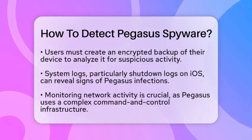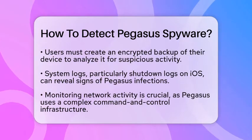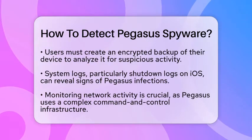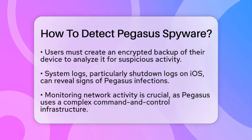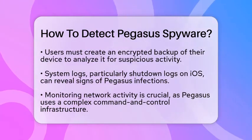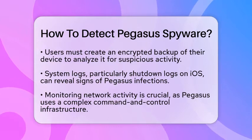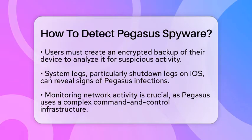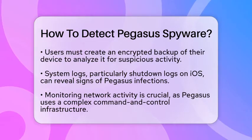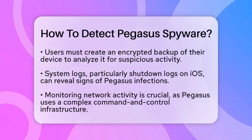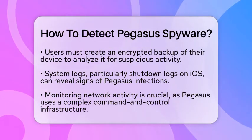Monitoring network activity is another key strategy. Pegasus utilizes a complex command and control infrastructure called the Pegasus Anonymizing Transmission Network. This network involves multiple domain names and randomized subdomains to evade detection. By keeping an eye on network traffic for connections to known Pegasus domains or unusual activity, you can identify potential infections.